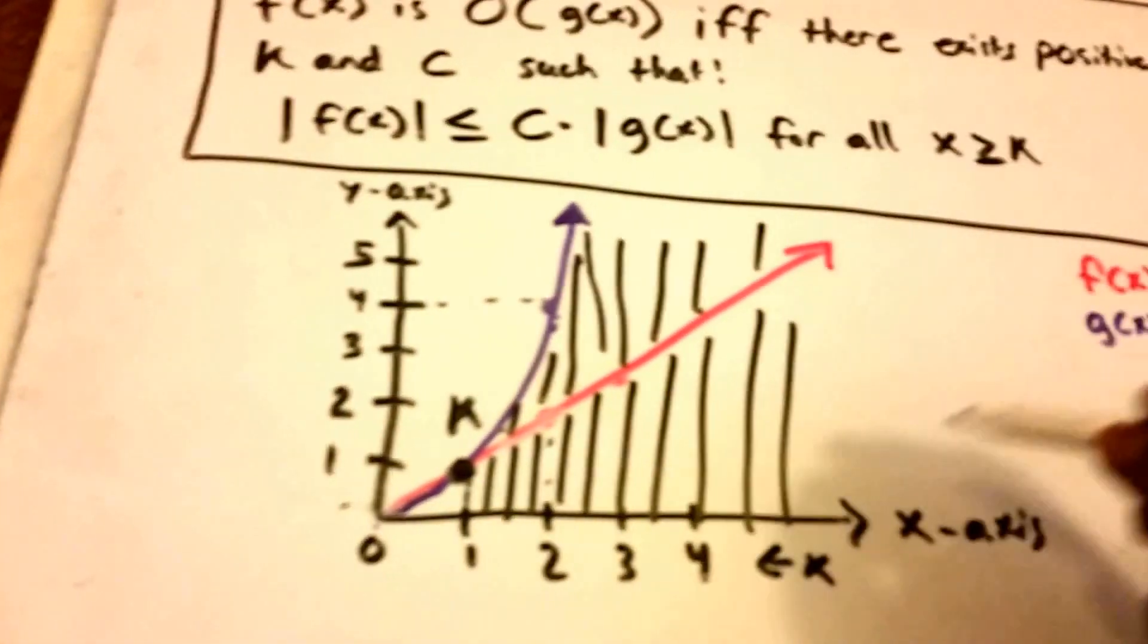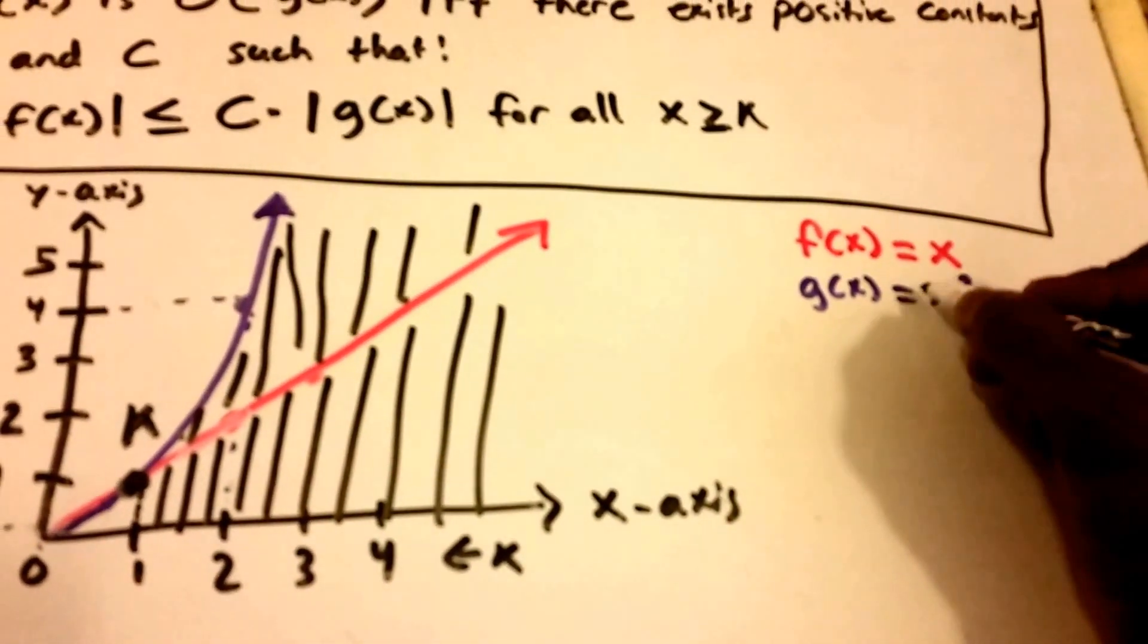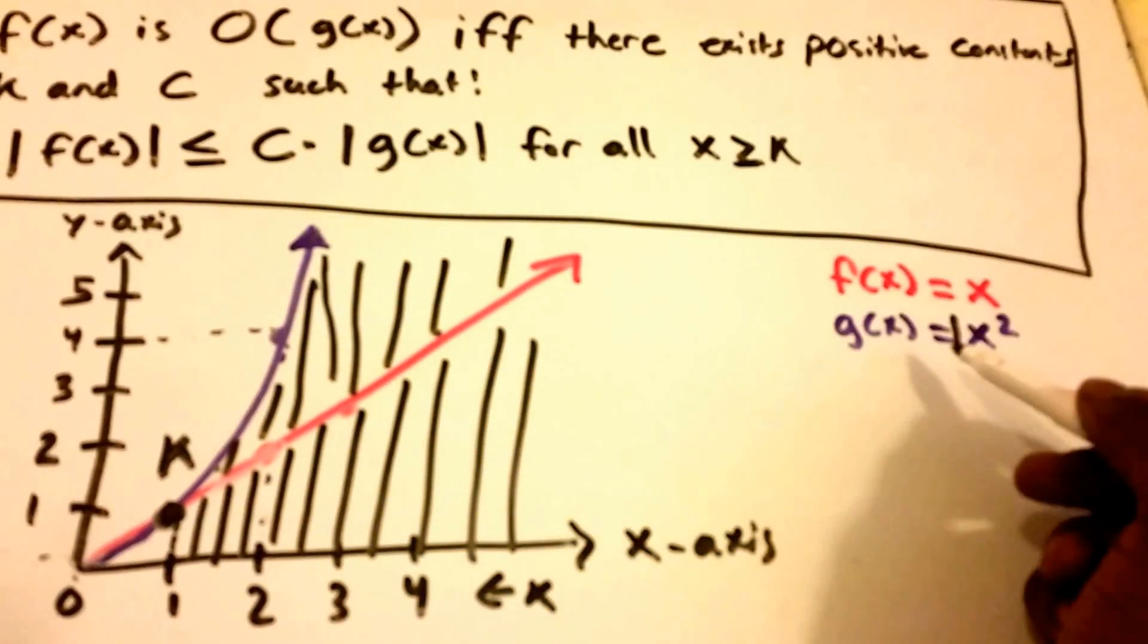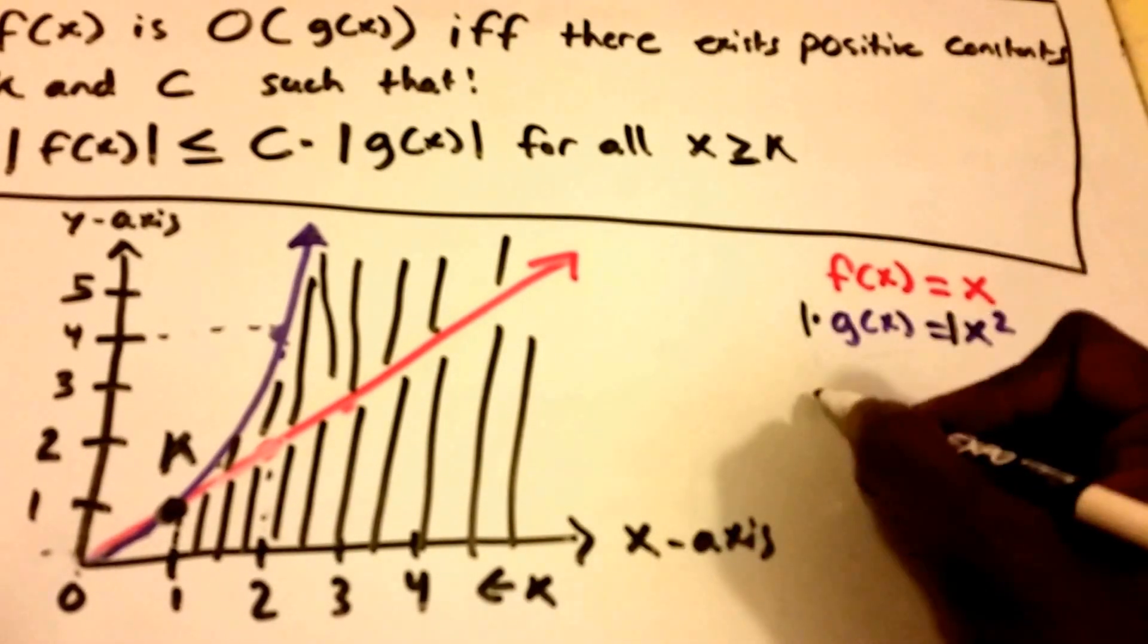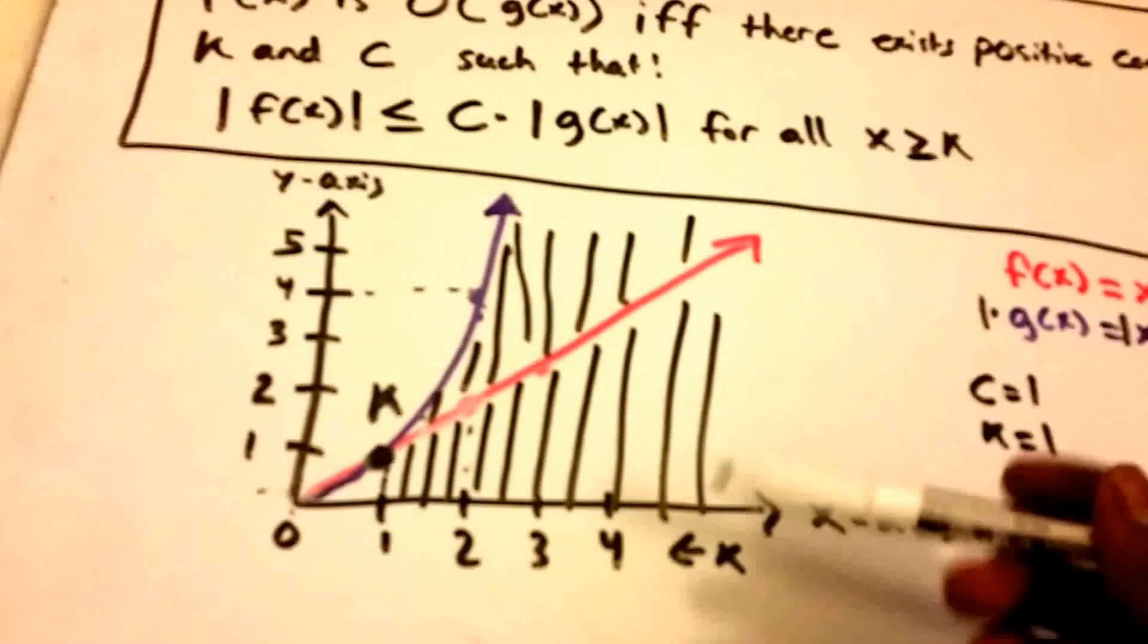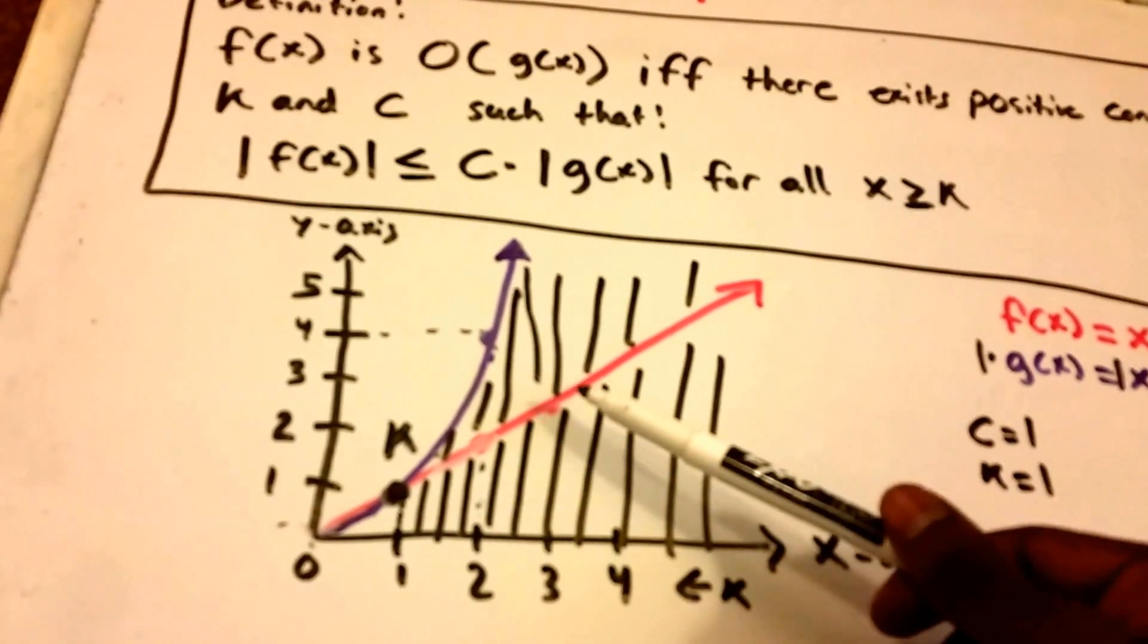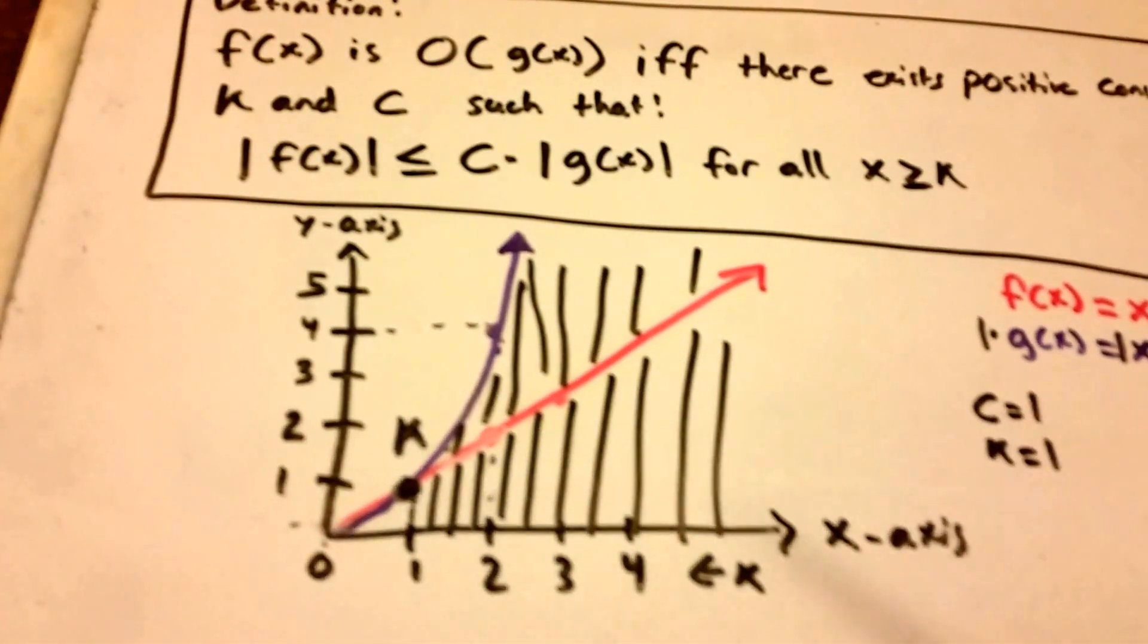Our C value in this case, again, is just one, right? Because one times G of X is one times X squared. So again, C equals one, and now K equals one as well, K equals this one down here. And we can see that our function f of X is Big-O of G of X.